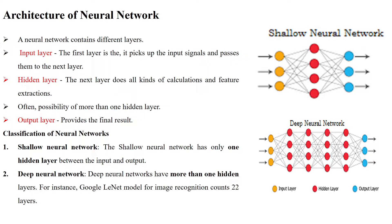Welcome to ANN working principle. ANN has three types of layers. The first is the input layer, where we pass input into the neural network. Then we have the hidden layers, which perform calculations and feature extractions, learning the patterns of the given input. Then there is the output layer, which predicts the output from the patterns learned by the hidden layer.